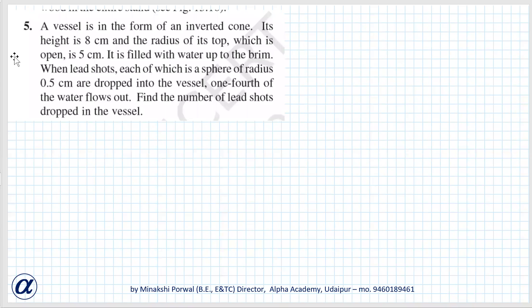Exercise 13.2, question number five. A vessel is in the form of an inverted cone. Its height is eight centimeters and the radius of its top, which is open, is five centimeters. It is filled with water up to the brim. When lead shots, each of which is a sphere of radius 0.5 centimeters, are dropped into the vessel, one-fourth of the water flows out. Find the number of lead shots dropped in the vessel.